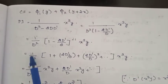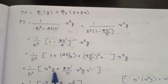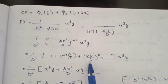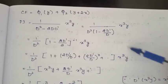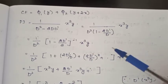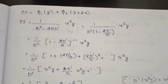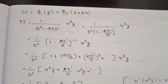So we get 1 by D squared times [1 plus (2D'/D) plus (2D'/D) squared + ...] into x cubed y. Multiply through: x cubed y plus 2D'/D into x cubed y plus (2D'/D)² into x cubed y. Note: D' means differentiate with respect to y, D means differentiate with respect to x. Also, 1/D means integrate with respect to x, and 1/D' means integrate with respect to y.